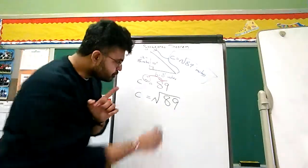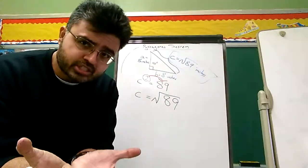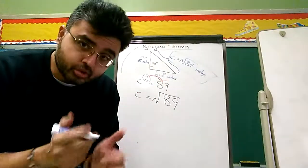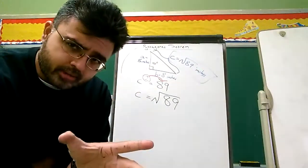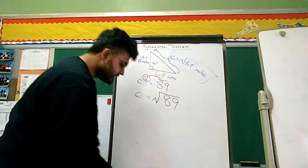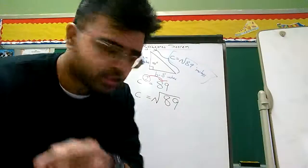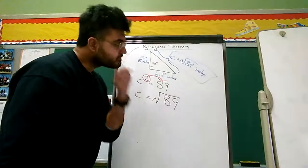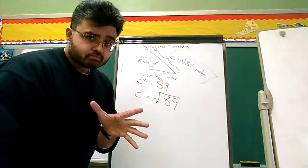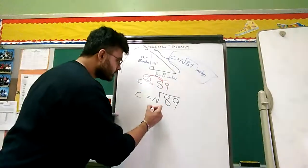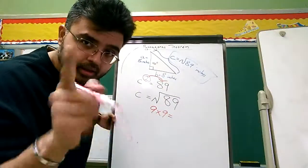How about 7 times 7? What is that? 49? That's too small. 8 times 8? 64? Too small. How about 9 times 9? 81. Good. That's pretty close. That's very close, isn't it? How about 10 times 10? What is 10 times 10? 100. Very good.